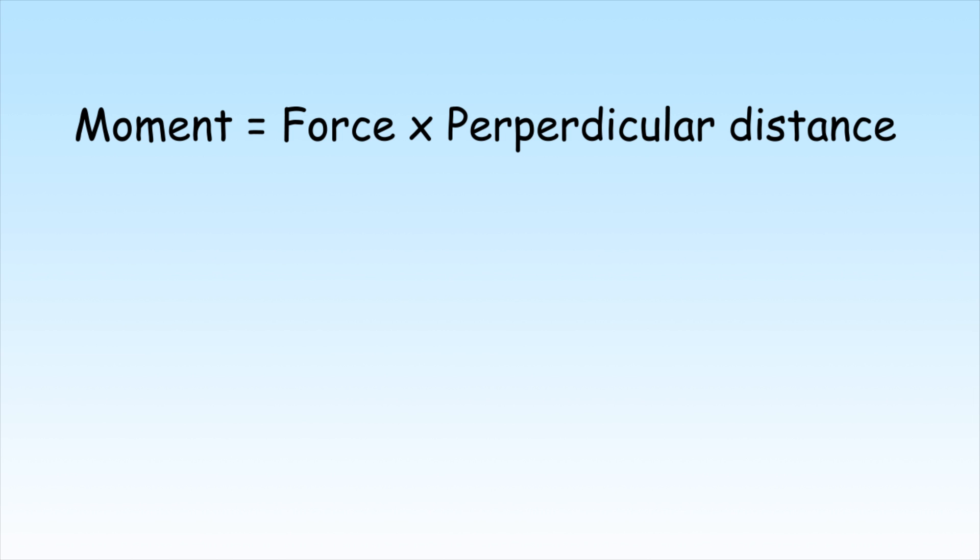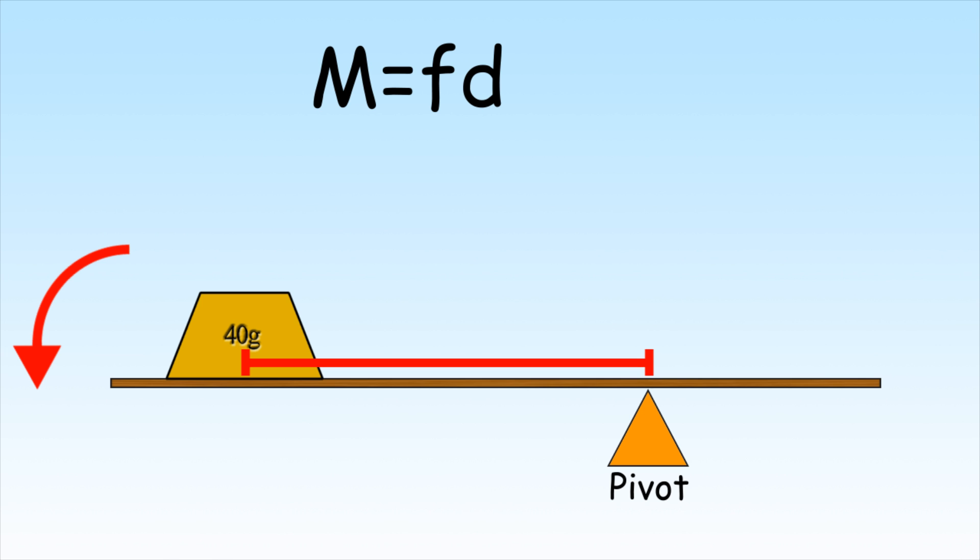The law of moments uses the formula moment equals force by perpendicular distance from the pivot. Mathematically, this is expressed by M equals FD, where F is the force, D is the perpendicular distance between the force and the fulcrum.